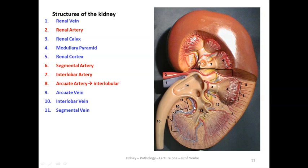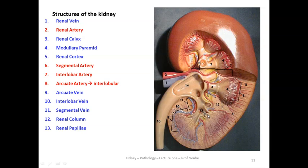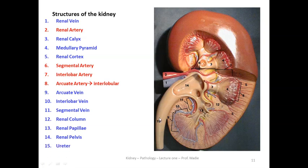Number twelve is the renal column — the area that lies between the pyramids. Number thirteen is the renal papilla — you are going to hear something called papillary necrosis, or renal papillary necrosis. Number fourteen is the renal pelvis, of course. And number fifteen is the ureter. These are the very important structures that you have to know by heart.